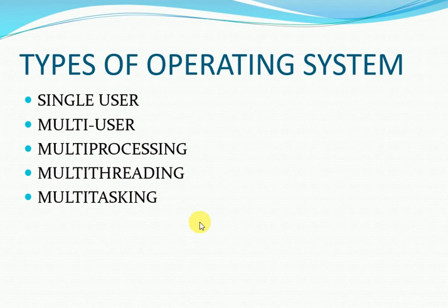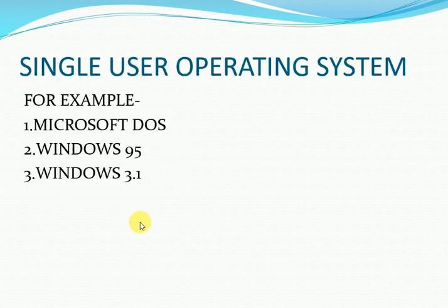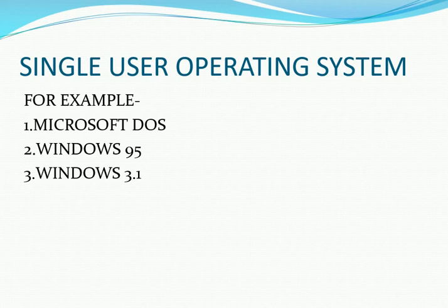Let's discuss in detail. First is single user operating system. When referring to a computer operating system, a single user operating system is a computer with an operating system that supports a single user at once or at different times. For example, Microsoft Windows 95 and Windows 3.1.